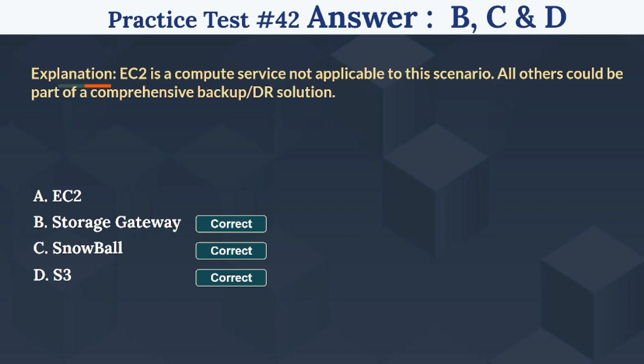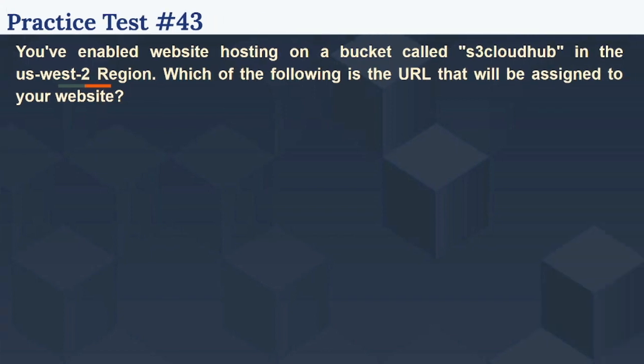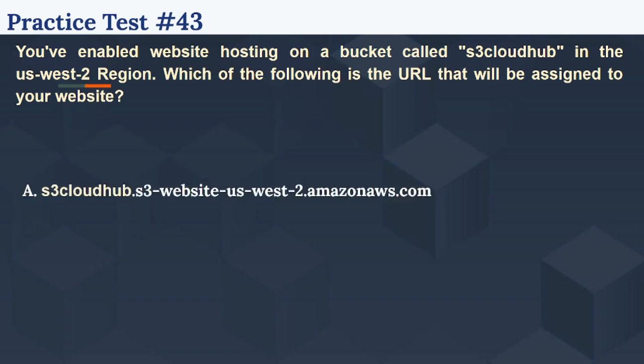The 43rd question: You've enabled website hosting on a bucket called S3 CloudHub in the US West 2 region. Which of the following is the URL that will be assigned to your website? Option A: S3CloudHub.s3-website-us-west-2.amazonaws.com.